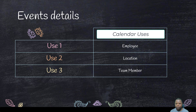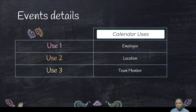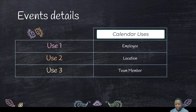Someone can book with a particular branch of a company, and that branch is represented by a calendar. Sometimes you might have a sales team where bookings are distributed equally among members. Each calendar can be assigned to a team member. In Squarespace Scheduling, it depends on the package you've bought — more calendars means more flexibility in assigning them to employees, locations, or team members.